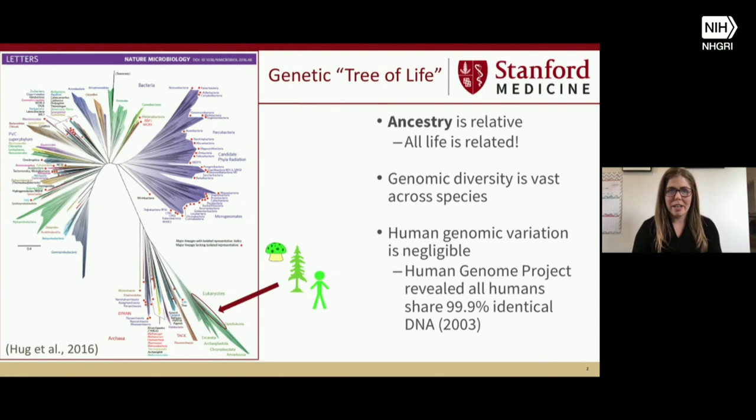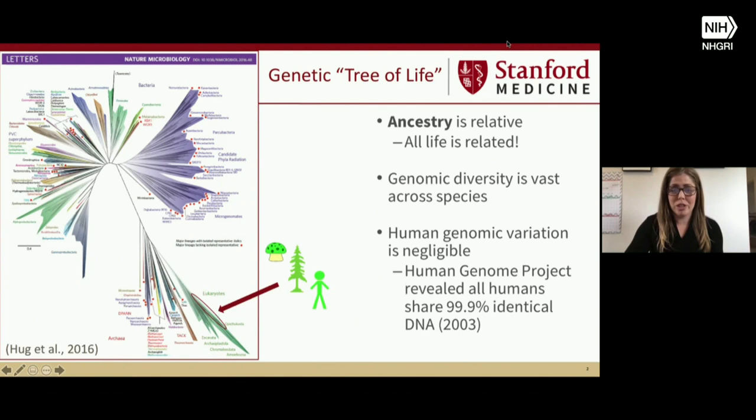Genomic diversity is vast across species, and the variation that we have in our genome as humans is really small. The Human Genome Project in 2003 showed us that all humans share 99.9% of our genome identically. But that tiny percentage is what we tend to focus on in genetics, and particularly in human genetics — that's entirely what we're focused on: the small percentage of our genomes that actually do differ among humans.